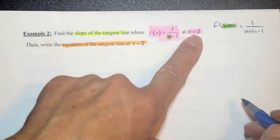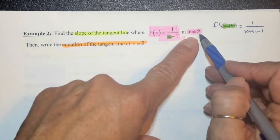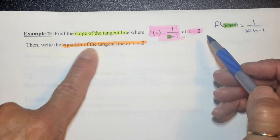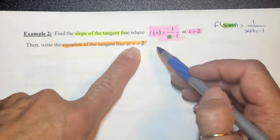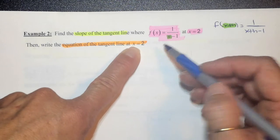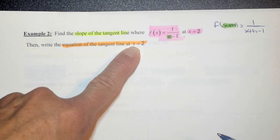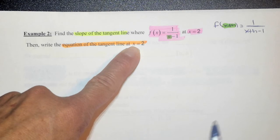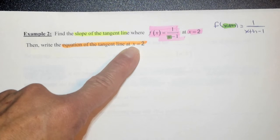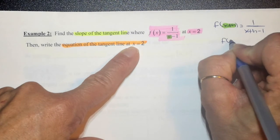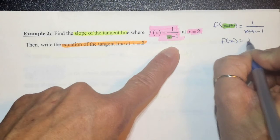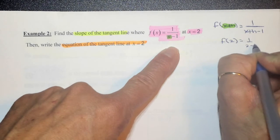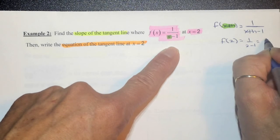We also need a corresponding y-value because they want an equation of the tangent line at that point. As discussed, you need a point — an x and a y coordinate. So I need to evaluate f of 2, which is 1 over 2 minus 1, which equals 1.